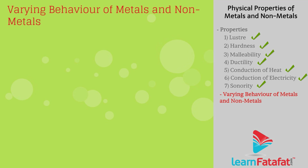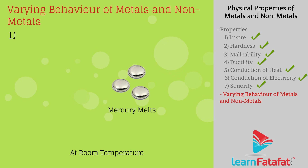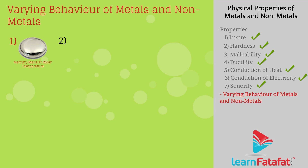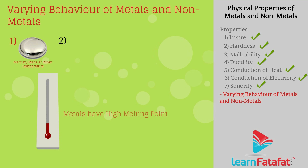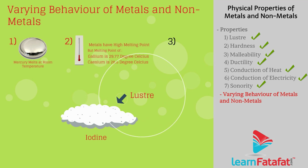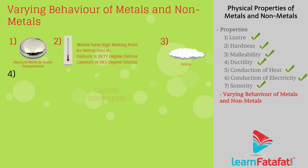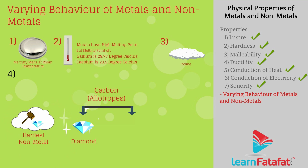Varying behavior of some metals and non-metals: At room temperature, all metals are solid except mercury. Metals have high melting points, but gallium and caesium are metals that melt at very low temperatures. Metals are lustrous, but iodine is a non-metal that is lustrous. Non-metal carbon exists in different forms — a property called allotropy. In its diamond form, it is the hardest natural substance.